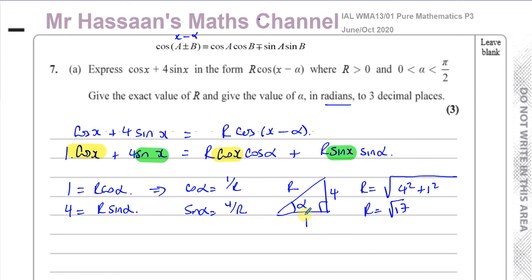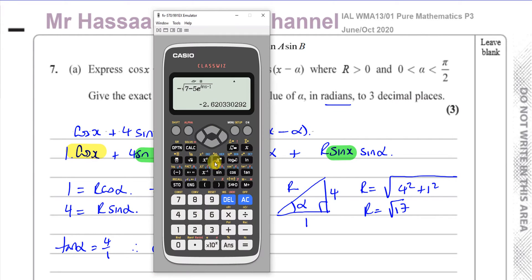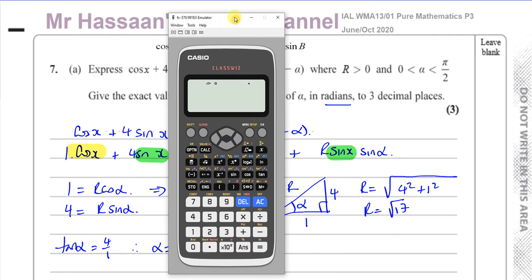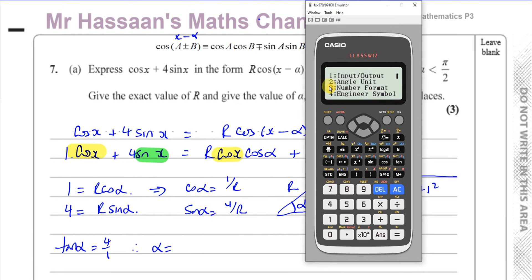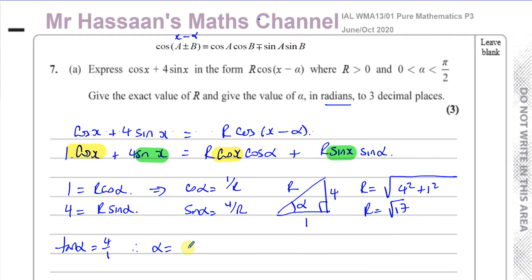Then I need to find the angle alpha, which I can do very easily using tangent. I can say that the tangent of alpha is equal to the opposite over the adjacent, which is four over one, so alpha is equal to inverse tan of four. Now I have to make sure my calculator is in radian mode. This is how you change the radian mode: shift, then menu, then angle input, then radians. So I'll say inverse tan of four, and that gives me 1.3258.